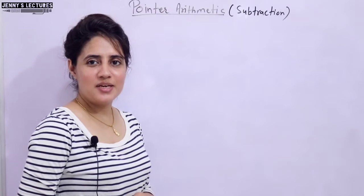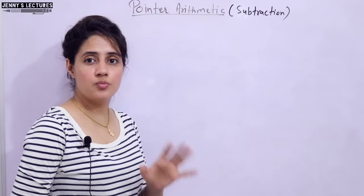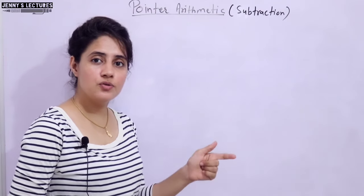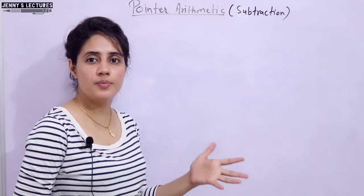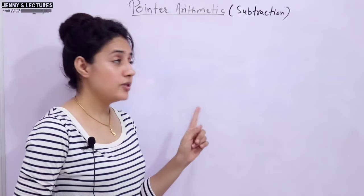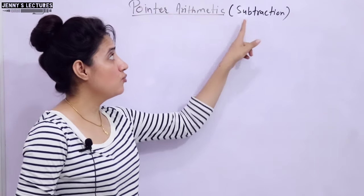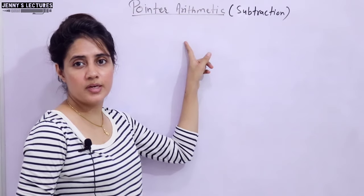In this series on learning programming in C, we are discussing arithmetic operations on pointers. In the previous video, I discussed how to perform addition operation on a pointer. The next topic is how to perform subtraction on a pointer variable.